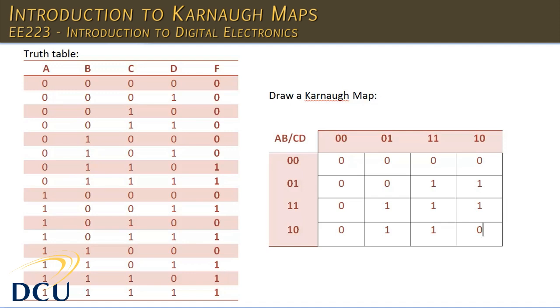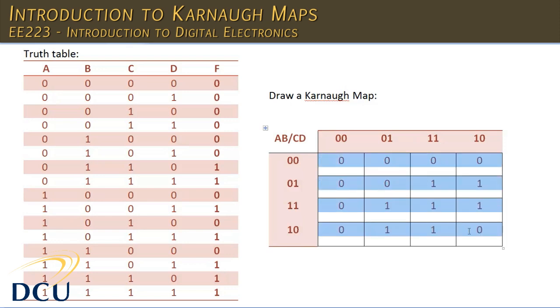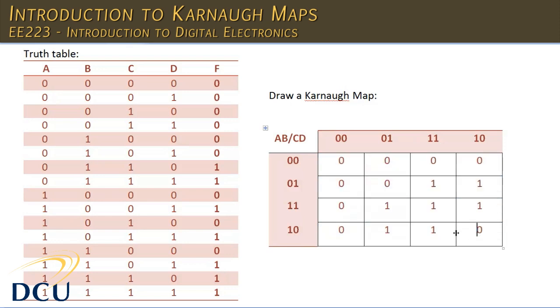When we are finished, our Karnaugh map looks like this — we have all of our F states listed and the map is fully populated.